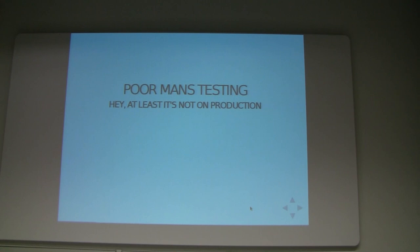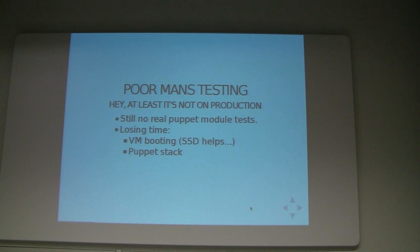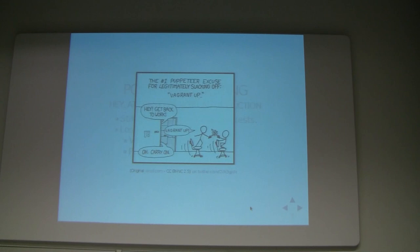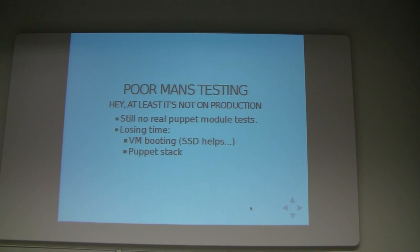But this really is what I call poor man's testing. It's not on production, but we're still not actually testing what our module does — we're testing the general effect of what the Puppet run does on our machine, not testing the code itself. And we're still losing time with Vagrant up, Vagrant down — it takes way too much time. As a bonus, if you have an SSD, Vagrant will go a lot faster. Another thing you lose time with is a complete Puppet stack — it's slower than not running the complete Puppet stack.